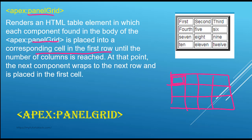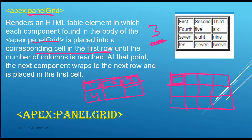So if you have specified the number of columns as three, the first element will go at this location, the second element will go at this location, and the third element will go at this location. Because the number of columns specified is three, the fourth element you're trying to add will go to the next row. The first element goes here, the second here, the third here, and then the fourth goes to the next row.